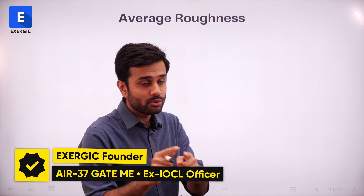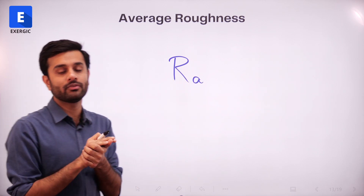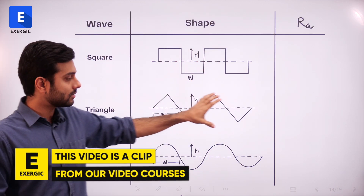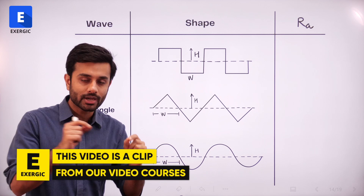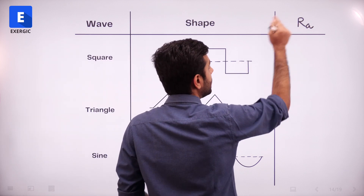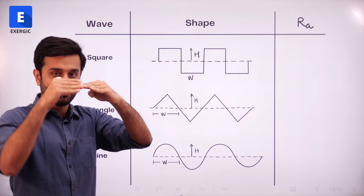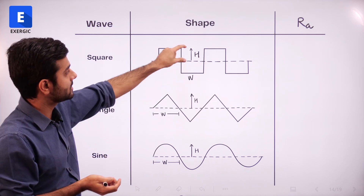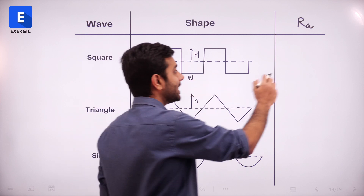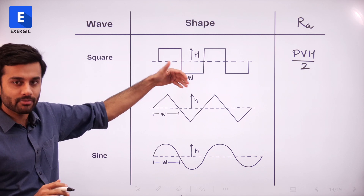In the last lecture, to find out the average roughness — the CLA value or RA value — we already discussed the direct formula for different wave types. For a square wave, step wave, or rectangular wave, simply find out the peak-to-valley height. For example, if H is the amplitude on one side, peak-to-valley height is 2H. Calculate that and divide by 2 — that is your RA value for a square or rectangular wave.